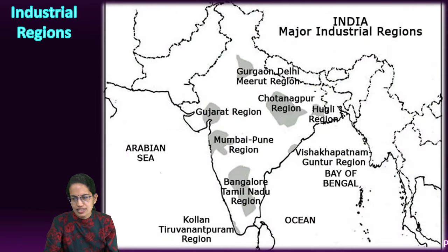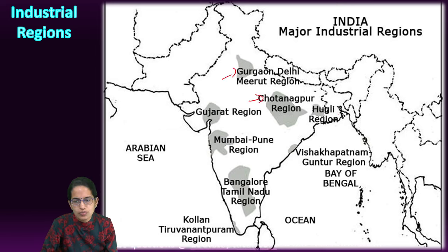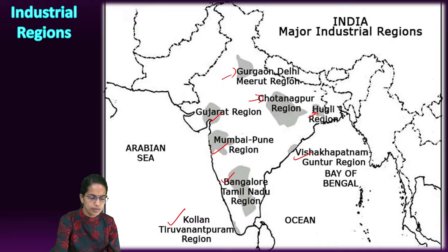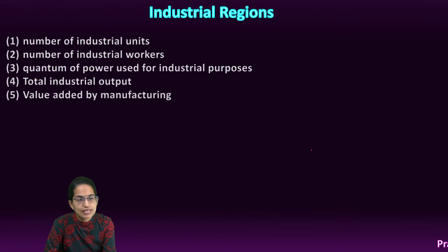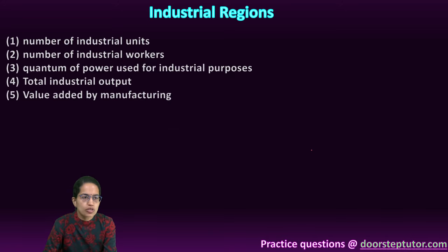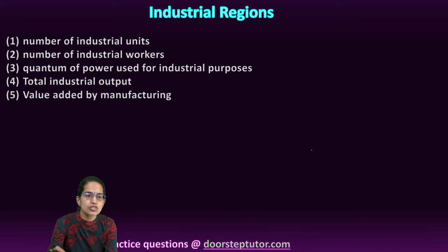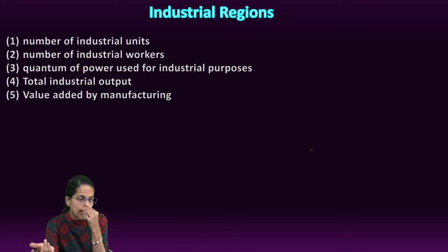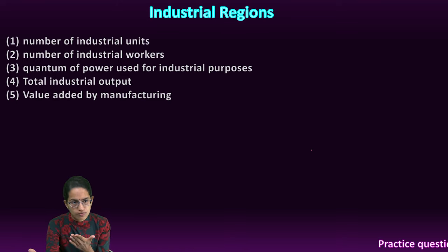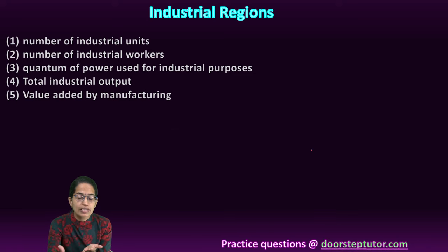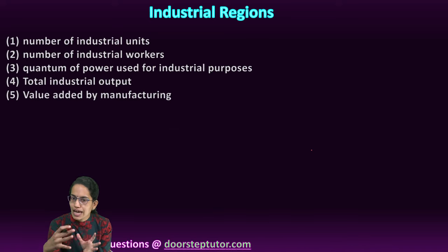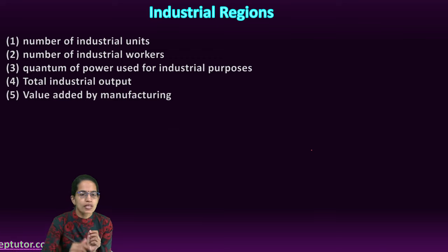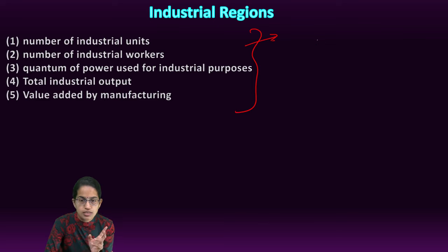The major industrial regions in India include Gurgaon-Delhi-Meerut, Chhota Nagpur region, Hooghly region, Gujarat, Mumbai-Pune, Bangalore, Thiruvananthapuram, and Visakhapatnam-Guntur. Industrial clusters are defined by five parameters: number of industrial units, number of industrial workers, power utilized for industry, total industrial output, and value addition by the manufacturing process — all of which together determine whether a region qualifies as an industrial cluster.